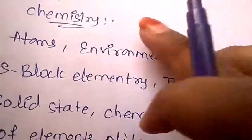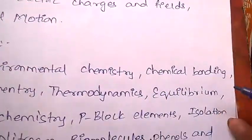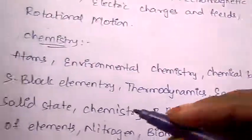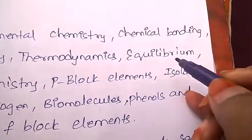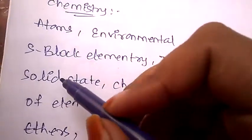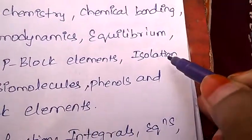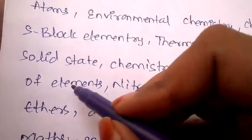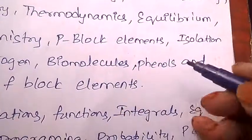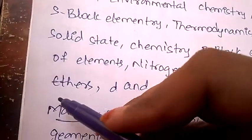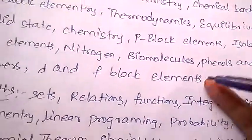Now let's see what is the syllabus for chemistry. For chemistry, the syllabus is atoms, environmental chemistry, chemical bonding, S-block, elementary thermodynamics, equilibrium, solid state chemistry, P-block elements, isolation of elements, nitrogen, biomolecules, phenols and ethers, D and F block elements.